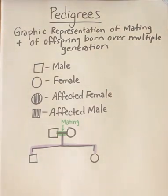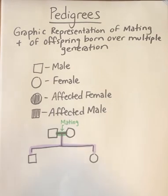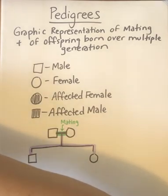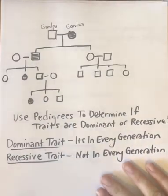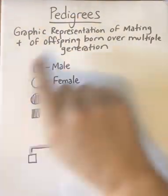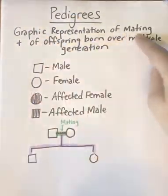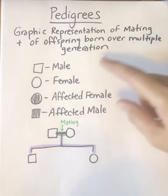We're going to talk about pedigrees. A pedigree is a graphic representation of mating and offspring. We're going to look at a pedigree that I drew out, and it's important that you understand the pedigree as a graphic representation.